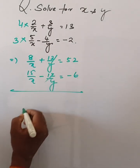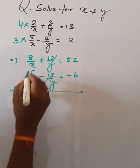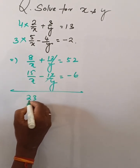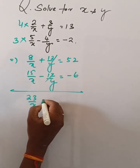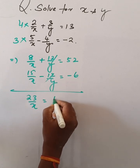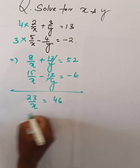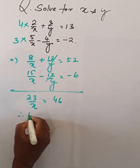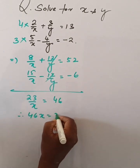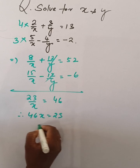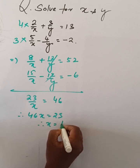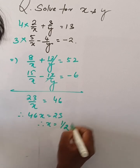The y terms are cancelled. 23 by x is equal to 46, then 46x is equal to 23, therefore x is equal to 1 by 2.